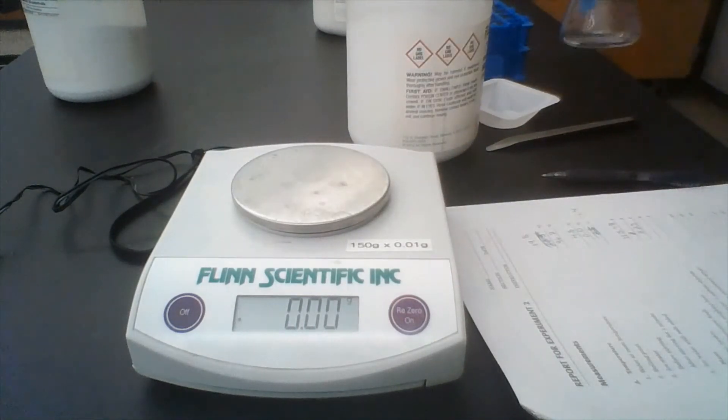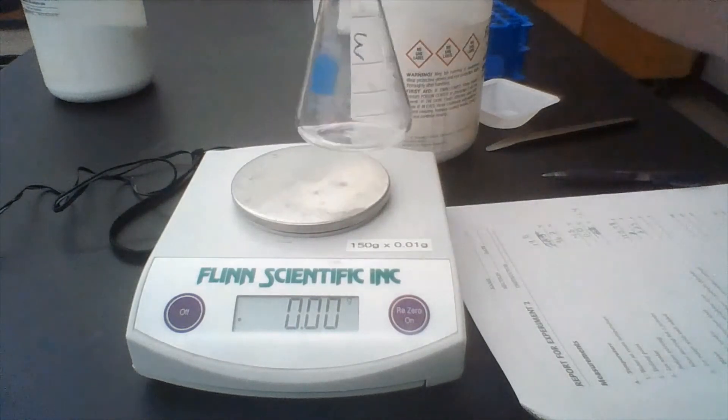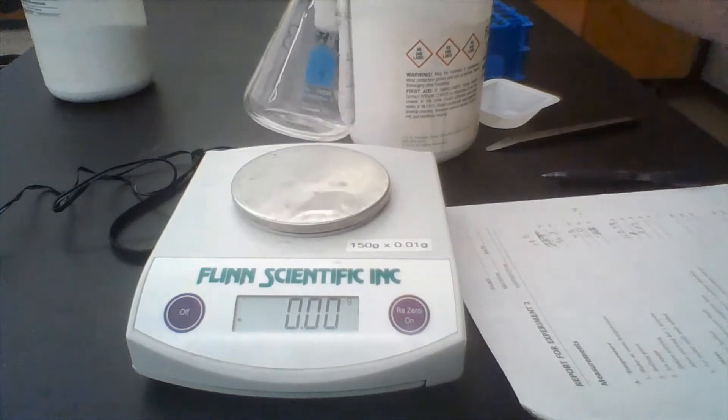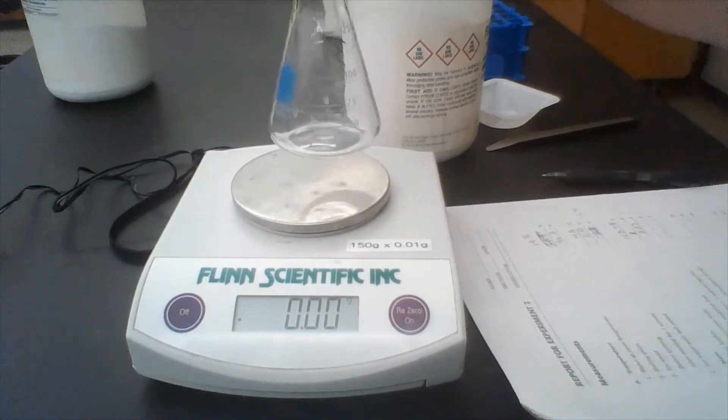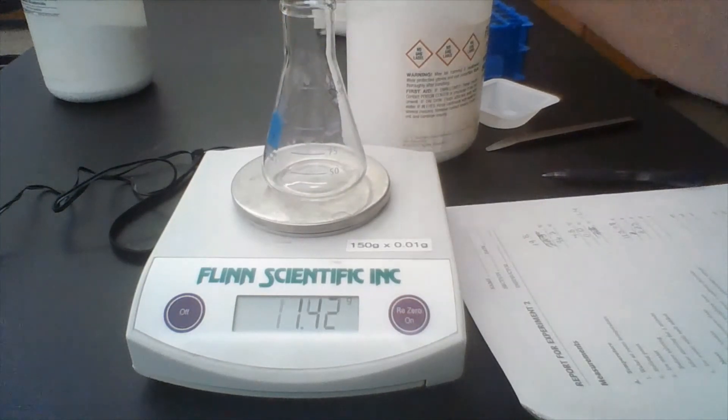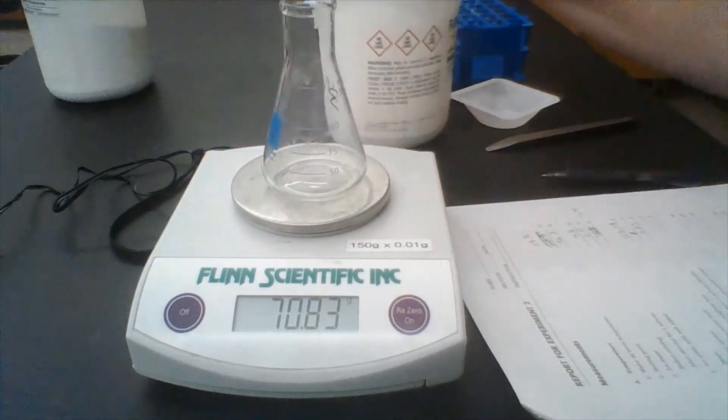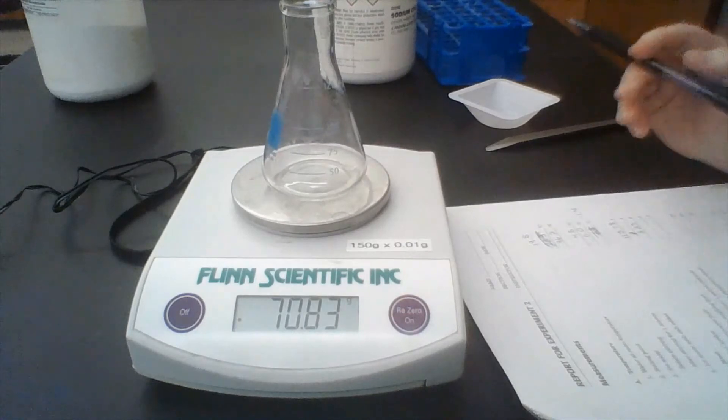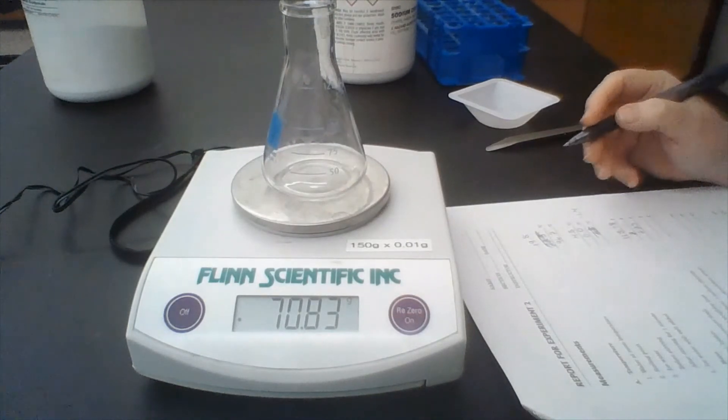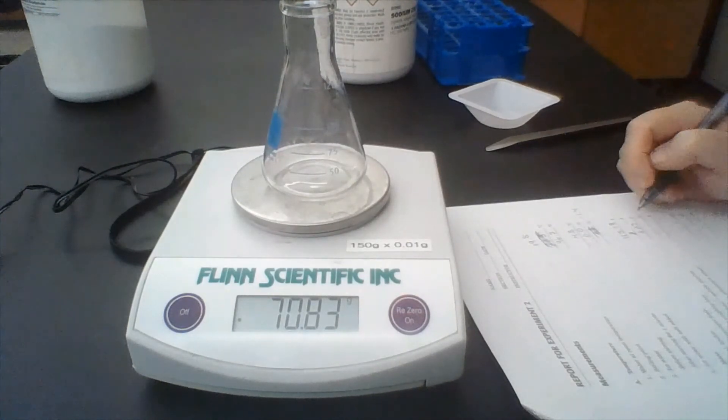And we're also going to measure a 250 milliliter, or a 125 milliliter Erlenmeyer flask. This flask that has the triangle shape is an Erlenmeyer flask, and that weighs 70.83 grams.